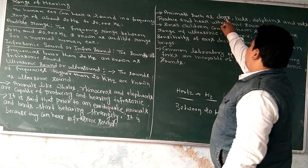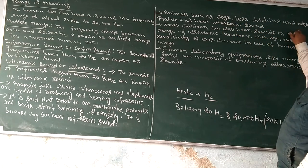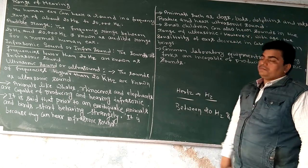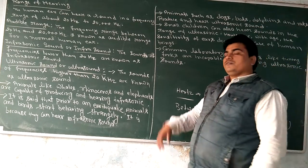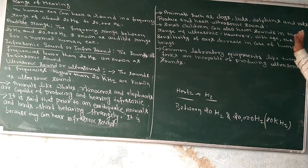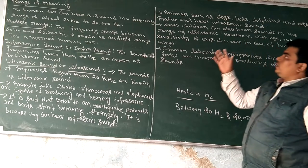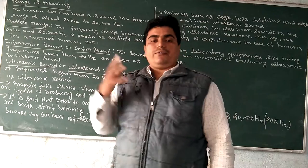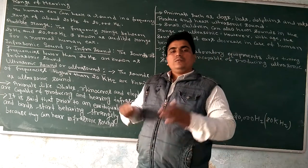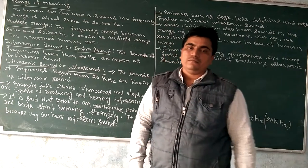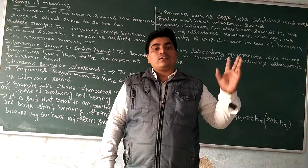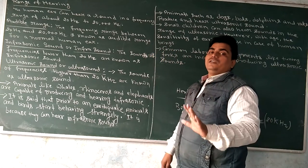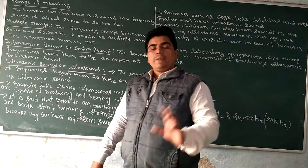Animals such as dogs, bats, dolphins, and rats can produce and hear ultrasonic sound. Some animals produce and hear infrasonic sound, and some produce and hear ultrasonic sound, but humans cannot hear ultrasonic or infrasonic sound.